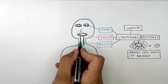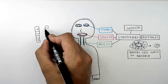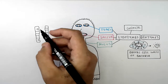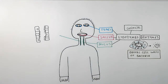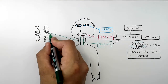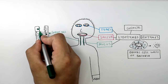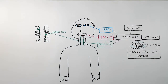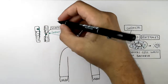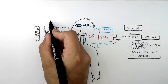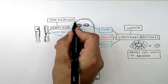In your trachea — your windpipe — there are two cells that form a defence against pathogens. These are ciliated cells, which have cilia — hairs — on them. And you've got goblet cells that produce mucus. This mucus secreted by the goblet cells traps dust and pathogens.